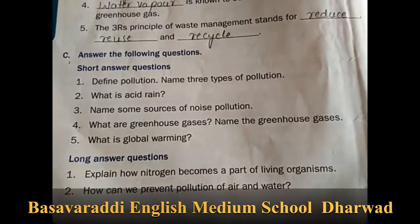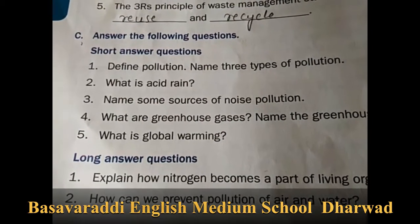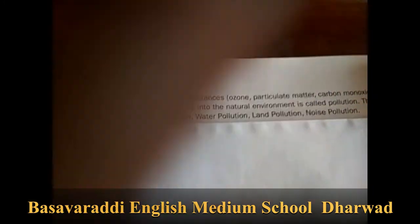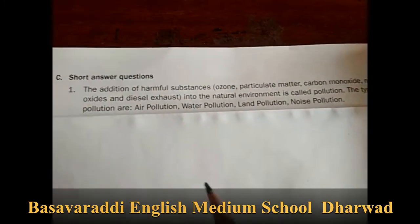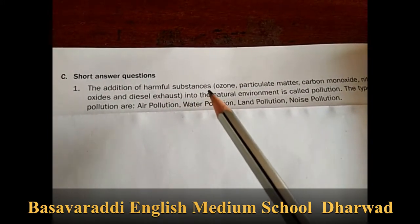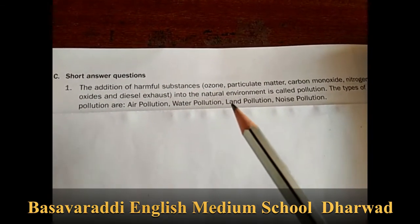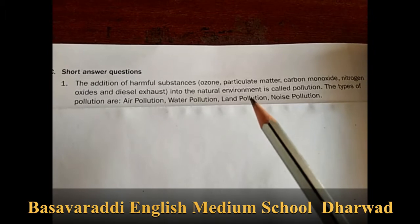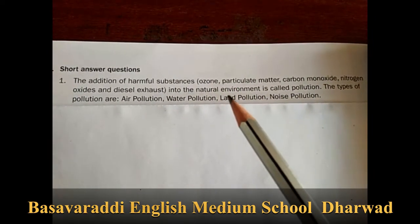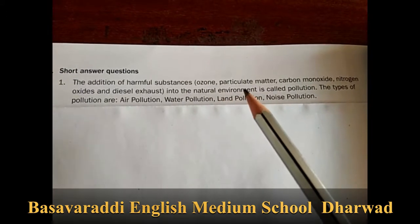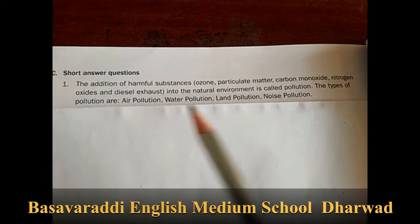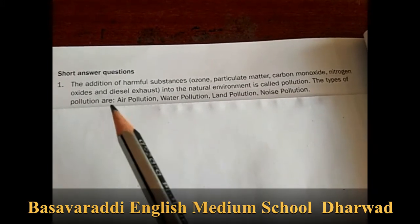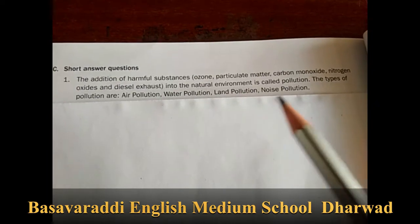Section C: answer the following questions. First question: define pollution and name three types of pollution. Answer: the addition of harmful substances into the natural environment is called pollution. Harmful substances include ozone, particulate matter, carbon monoxide, nitrogen oxides, and diesel exhaust. The types of pollution are air pollution, water pollution, land pollution, and noise pollution.